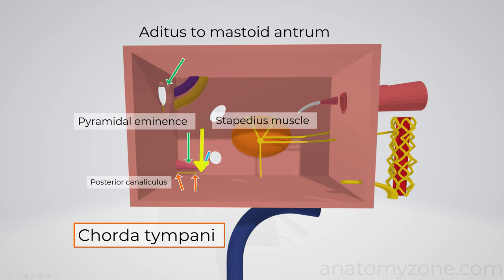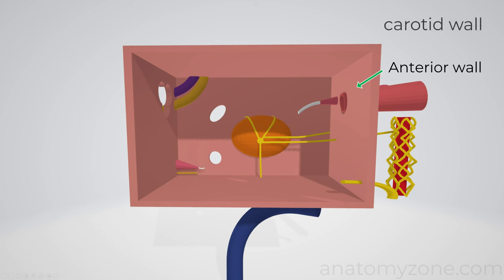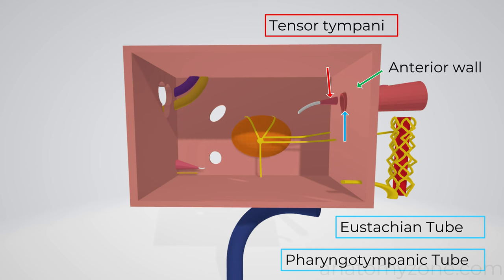The chorda tympani then traverses the middle ear cavity and exits via the anterior canaliculus in the anterior wall. In this model, the middle section of the nerve within the tympanic cavity has been cut. Lastly we have the anterior, or carotid wall. Inferiorly there's a thin layer of bone which separates the middle ear from the carotid canal. Superiorly it contains the opening for the eustachian tube, also known as the pharyngotympanic tube, and the opening for the tensor tympani muscle, which is contained within a bony canal.